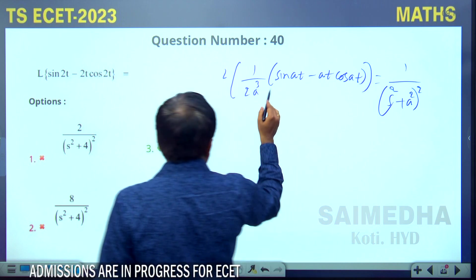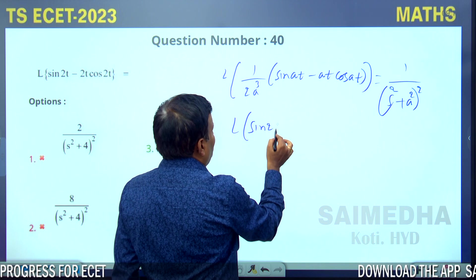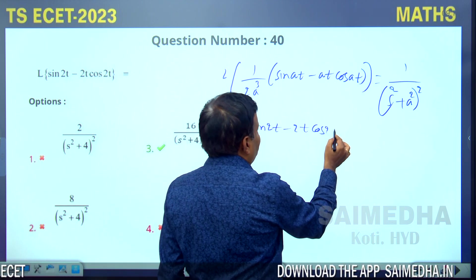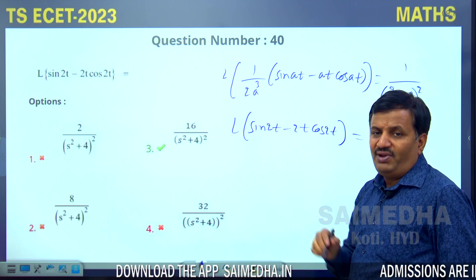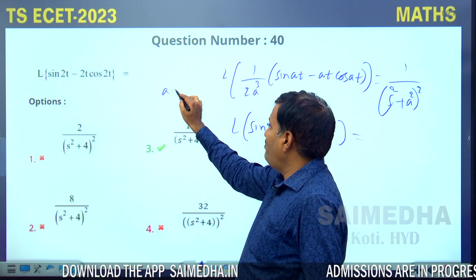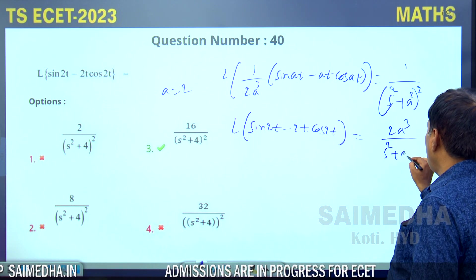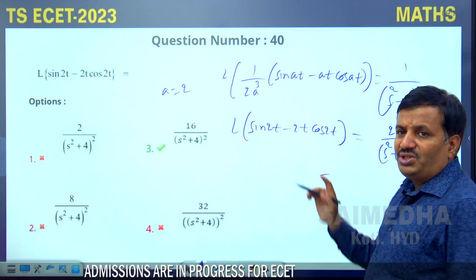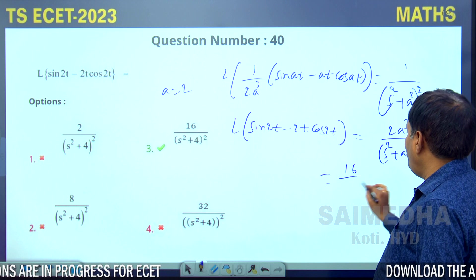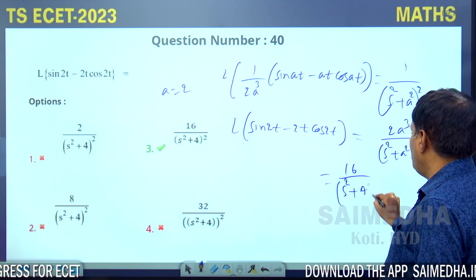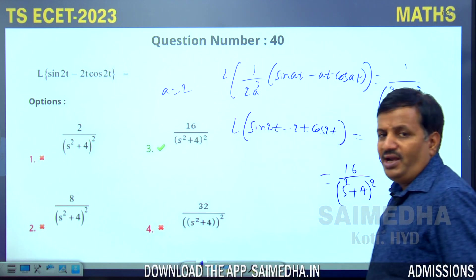In place of a, we have 2. So Laplace of (sin2t - 2t·cos2t) equals 2a³ = 2×2³ = 16, divided by (s²+4)². That gives 16/(s²+4)², which is option 3, the correct answer.